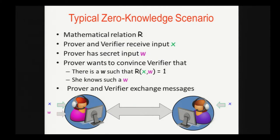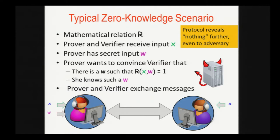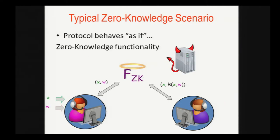They exchange messages and the protocol should reveal nothing further, even to an adversary corrupting the verifier. One way to formalize this property is that the protocol emulates an ideal process in which the prover hands x and the witness to an ideal functionality that outputs x in the relation to the verifier. Any action of an adversary in this ideal process can be simulated in the real.